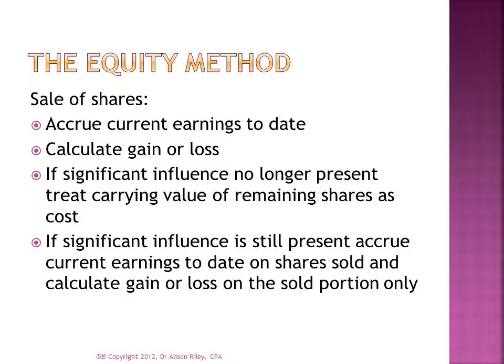Suppose an investor wishes to sell part of its investment in the investee. As with the sale of any asset, the potential for gain or loss arises. To correctly calculate any gain or loss, the investor must account for investee net income and dividends up to the point of sale — this establishes the book value of the investment at the date of sale. Gain or loss is calculated by comparing the sale proceeds to the book value of the portion of the asset sold. If the proceeds exceed the book value, the investor recognizes a gain; if proceeds are less than book value, a loss is recognized. After selling a portion of the investment, significant influence over the investee may be relinquished. In this case, the investment is accounted for using the cost method going forward, with the remaining book value becoming the new cost.